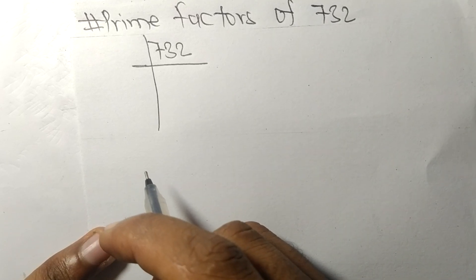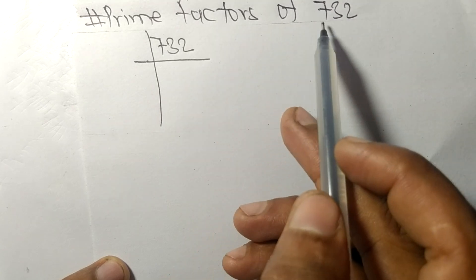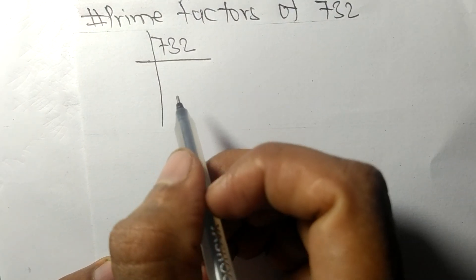So today in this video we shall learn to find the prime factors of 732. It contains an even number at the end, so this whole number is divisible by 2.